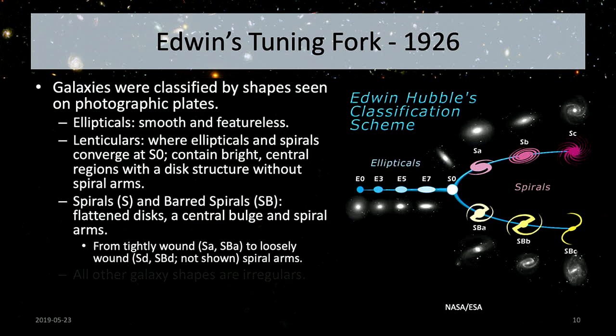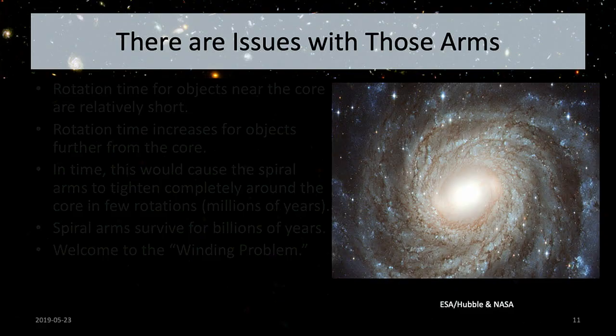There are also irregular galaxies — they're messy and don't look like a simple type. They're irregular for a good reason, which we'll touch on a little later.